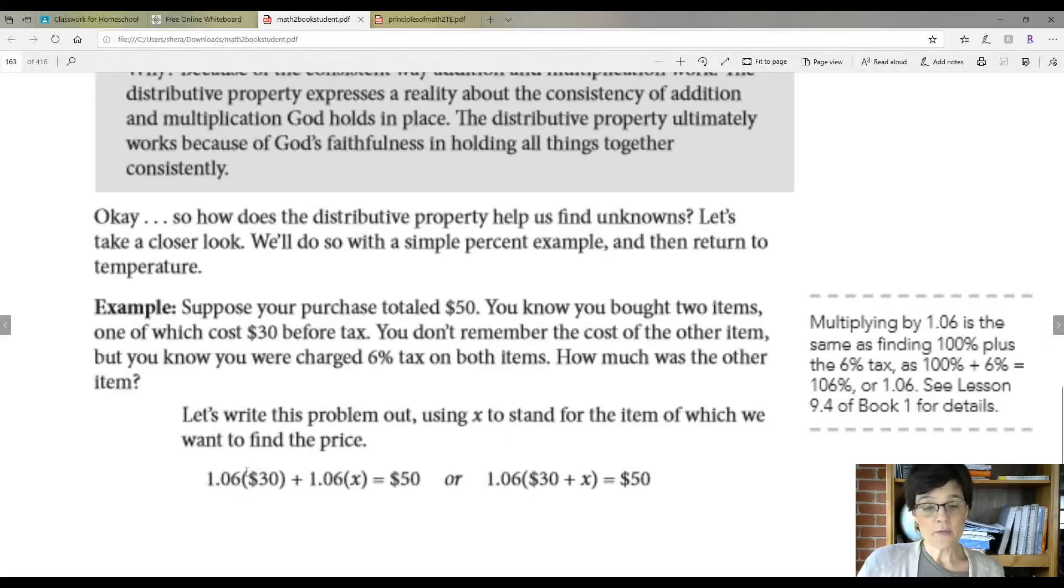Well, let's write the problem out using X to stand for the item of which we want to find the price. So 1.06 times $30 plus 1.06 times X. Where are they getting the 1.06?